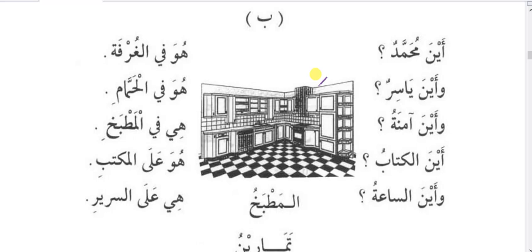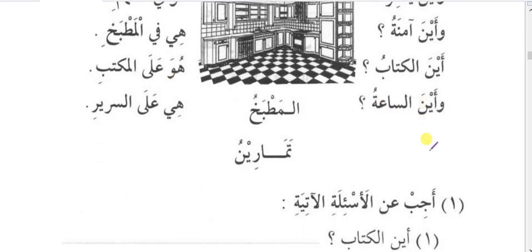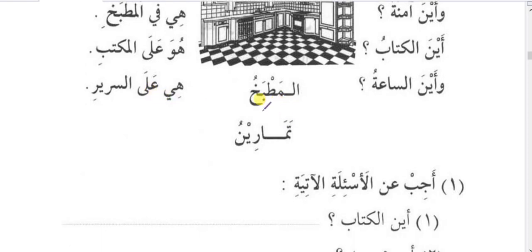Conversational examples using harfajar: Where is Mohamed? He is in the room — fil-ghurfati. Where is Yasir? He is in the washroom. Where is Amina? Wa hiya fil-matbakhi — she is in the kitchen. Where is the book? It is on the table — alal-maktabi. Where is the watch? It is on the bed — alas-sariri.